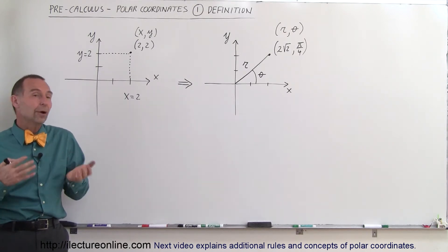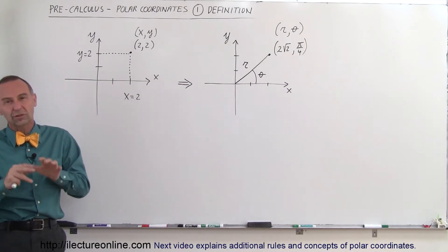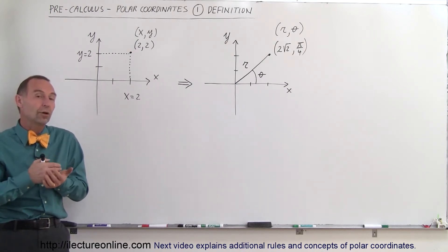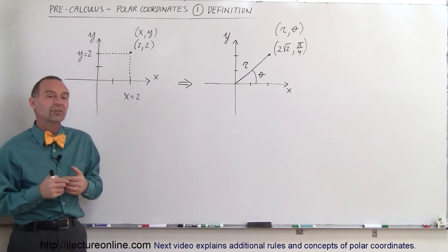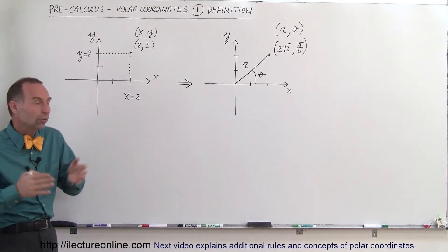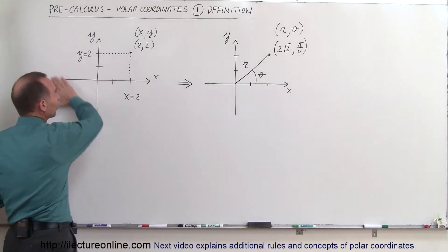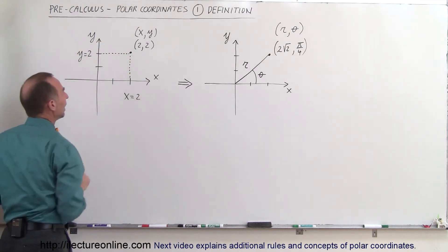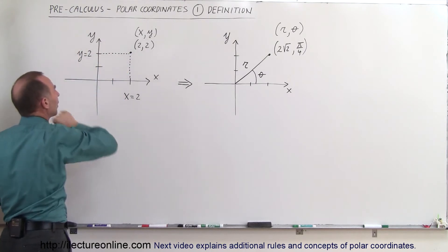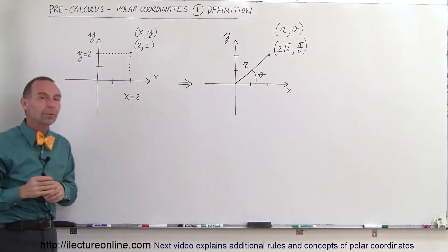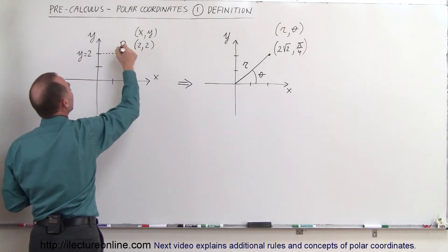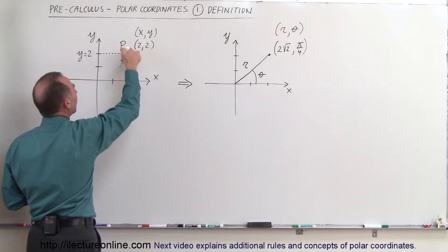Later on we'll also talk about cylindrical coordinates and spherical coordinates, but this is a good start to move away from what we call the x-y axis and the Cartesian coordinate system. In the Cartesian coordinate system, the x-y axis represents a plane, and on a plane you can have an infinite number of points. We use the variable p to indicate a point on the plane.